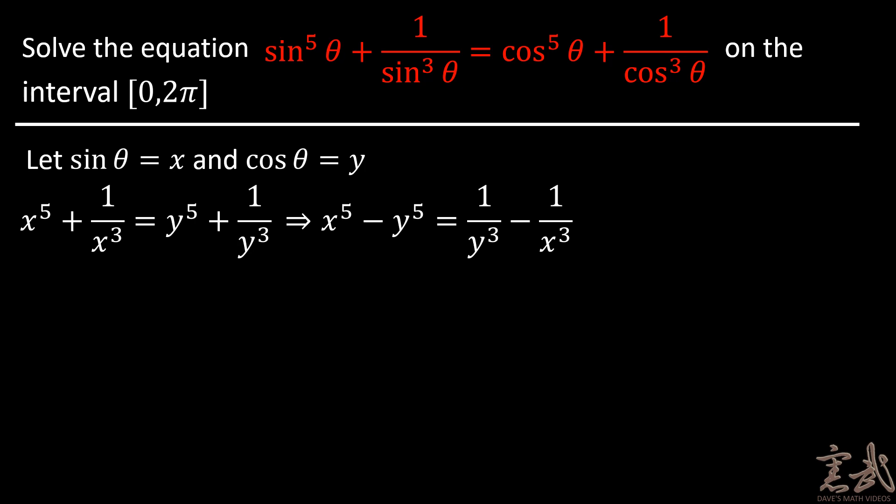I can bring the fifth powers on one side and the third powers on the other side to get x to the fifth power minus y to the fifth power. And I can also rewrite this slightly by rearranging the right-hand side. So I would get x to the fifth power minus y to the fifth power is equal to x cubed minus y cubed over x cubed y cubed.